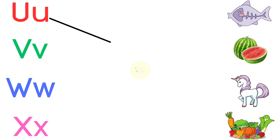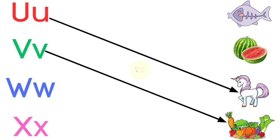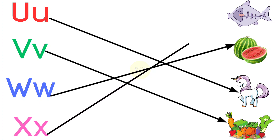U for unicorn, V for vegetables, W for watermelon, X for x-ray fish.